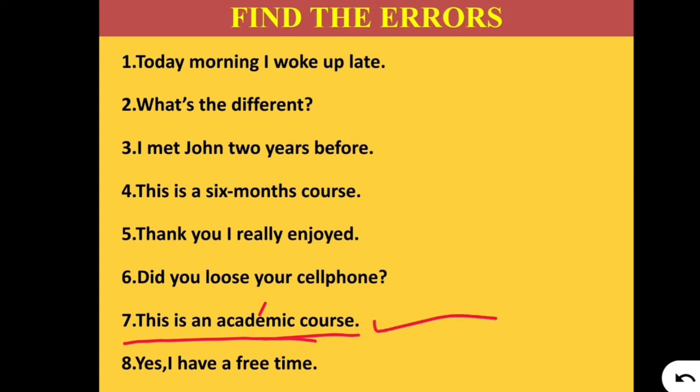Number 8: 'Yes, I have a free time.' The error is the article 'a.' Time is not a countable noun; therefore, you should not use 'a' before it. The correct sentence is: 'Yes, I have free time.' Because time cannot be counted, we remove the article. So these are all the errors we have found and corrected today.